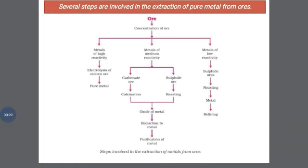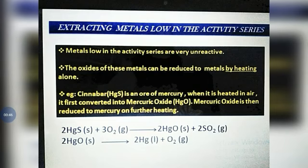We use different methods for removing the gangue, since metals have different reactivity. This flow chart indicates how we obtain pure metal. For metals low in the activity series, which are unreactive — if it is a metal sulfide, we convert it to metal oxide, and when we heat it again, it converts to pure metal.